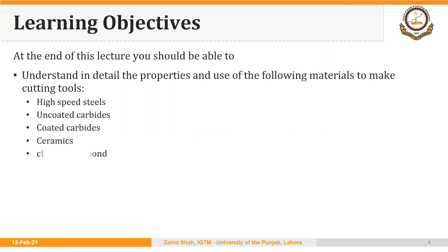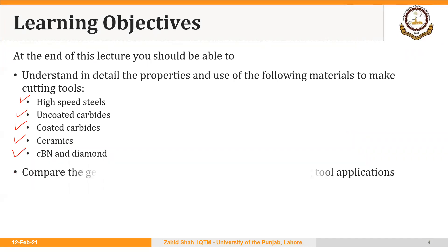The learning objectives of today's lecture are to understand the properties and use of the following materials to make cutting tools: high speed steels, uncoated carbides, coated carbides, ceramics, cubic boron nitride, and diamond. We will then compare the general properties of these materials in cutting tool applications using tables and graphs.